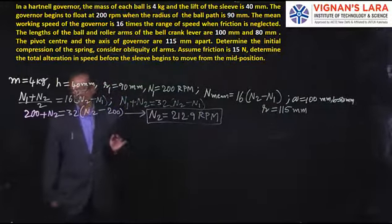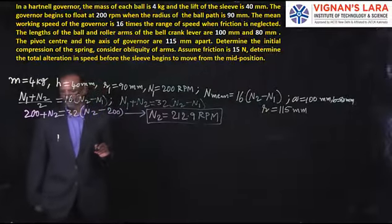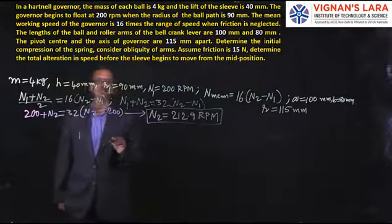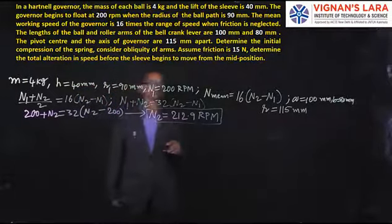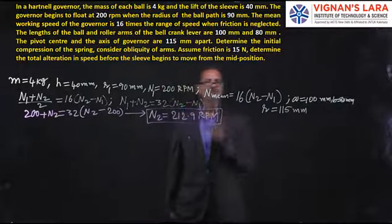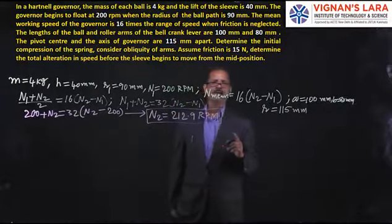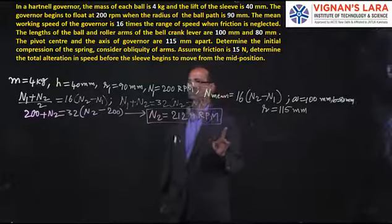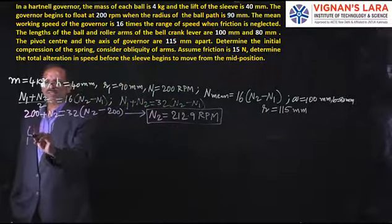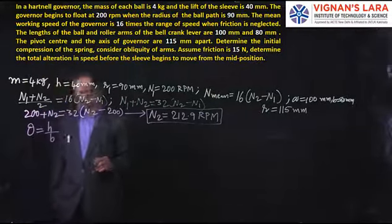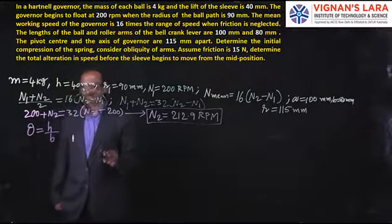Now let us find a1, a2, b1, b2, c1, c2 — because to calculate spring stiffness considering obliquity, we cannot assume a1 = a2 = a, b1 = b2 = b, and c1 = c2 = 0. The basic equation is theta = h/b, which relates the angular shift of the bell crank lever to the total lift h and the roller arm length b.